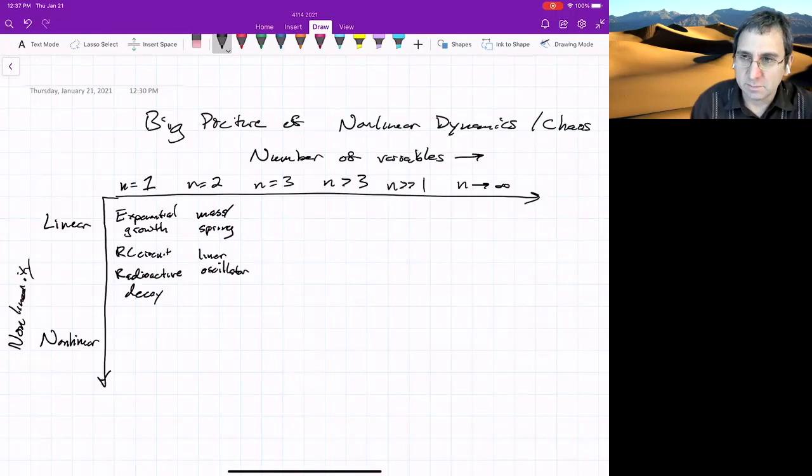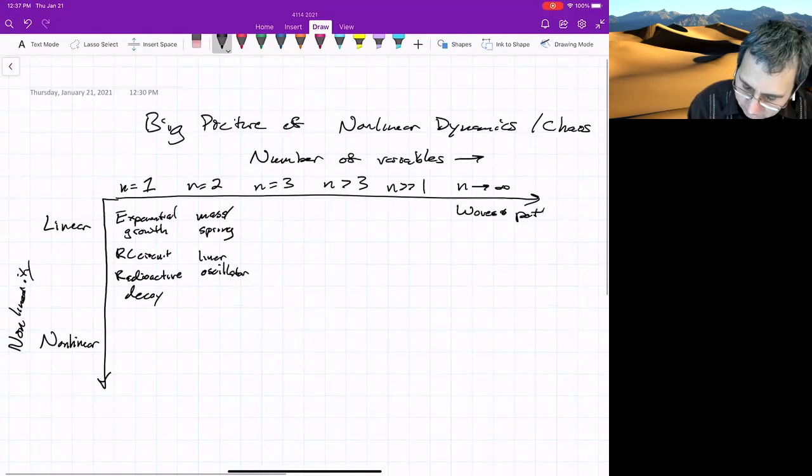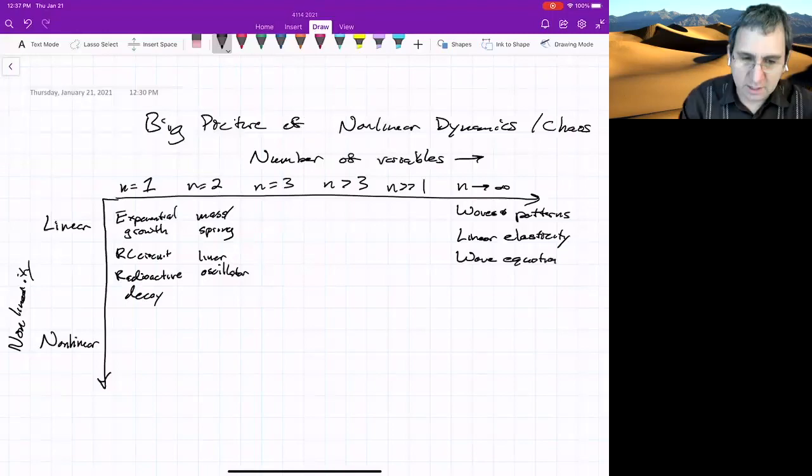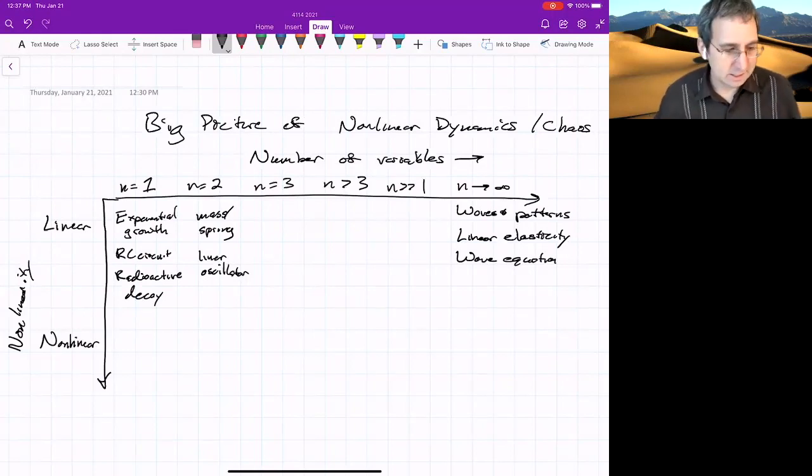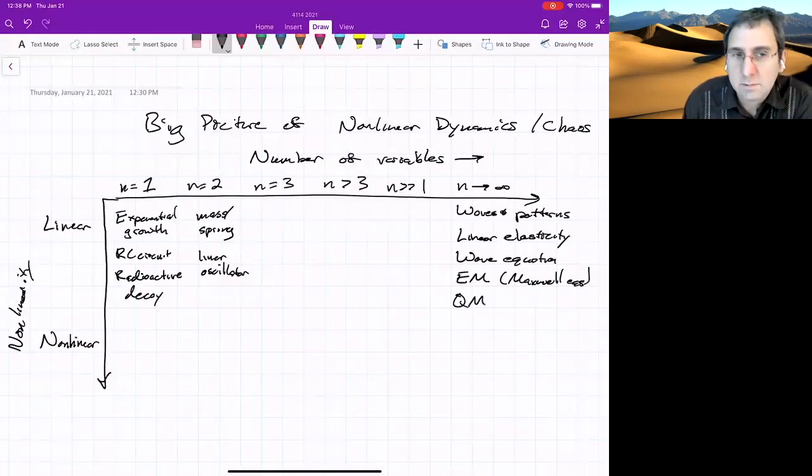Or n going to infinity is something that people have looked at quite a bit, continuum mechanics. So this would be like waves and patterns and linear things like linear elasticity, the wave equation. It's the linear PDE. I'm incorporating PDEs here, thinking of a PDE as equivalent to an infinite dimensional ODE. Electromagnetism, so Maxwell's equations are actually linear PDEs, even quantum mechanics. Quantum mechanics is linear.